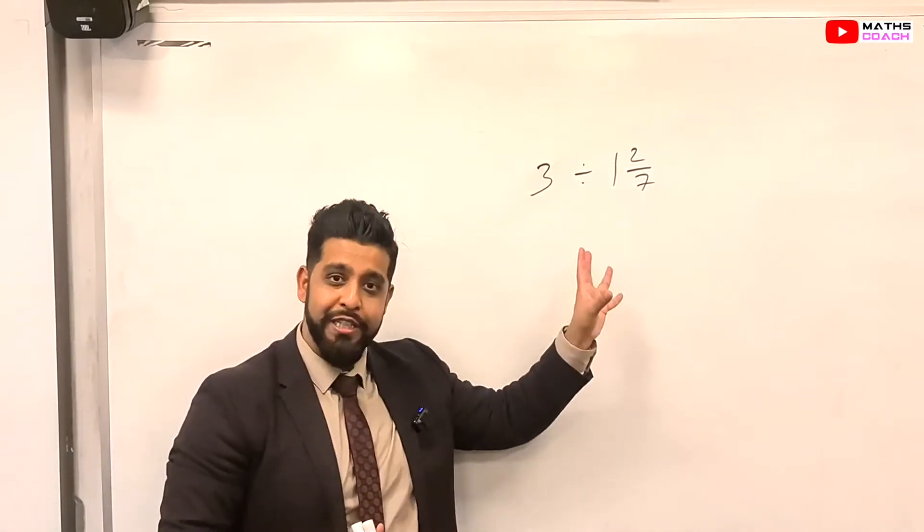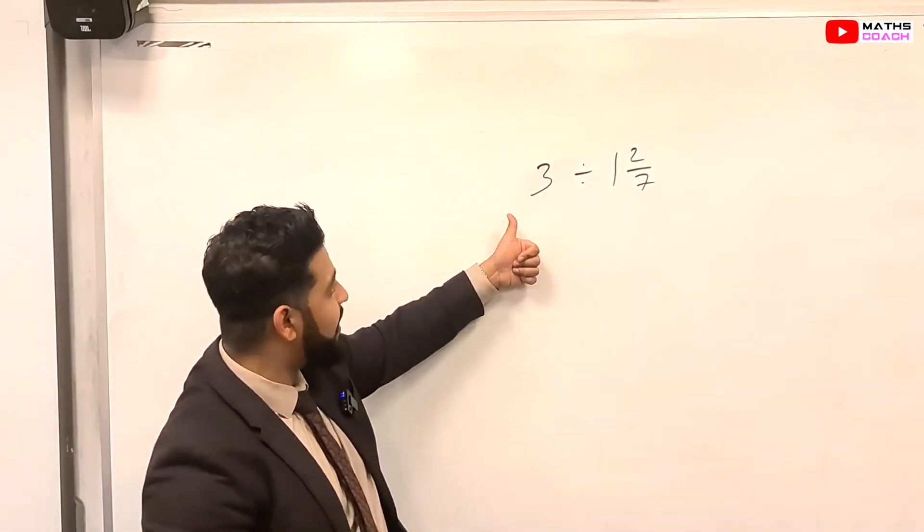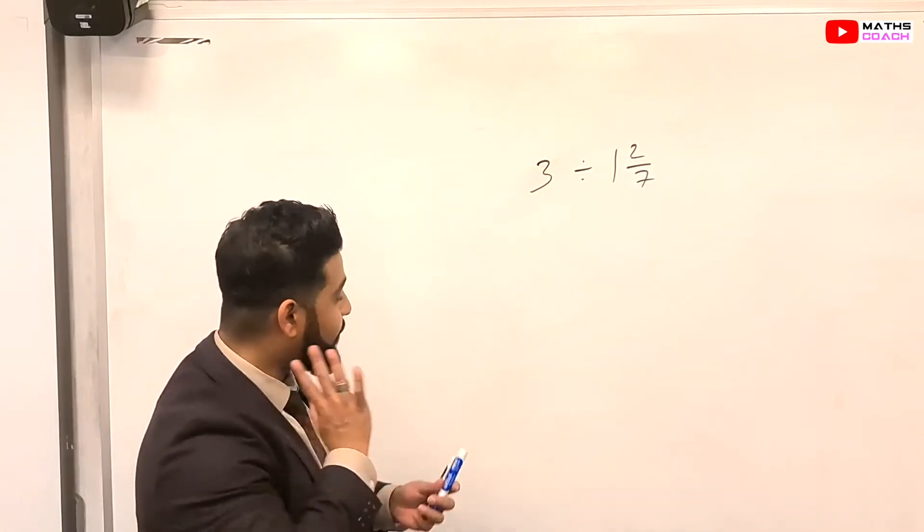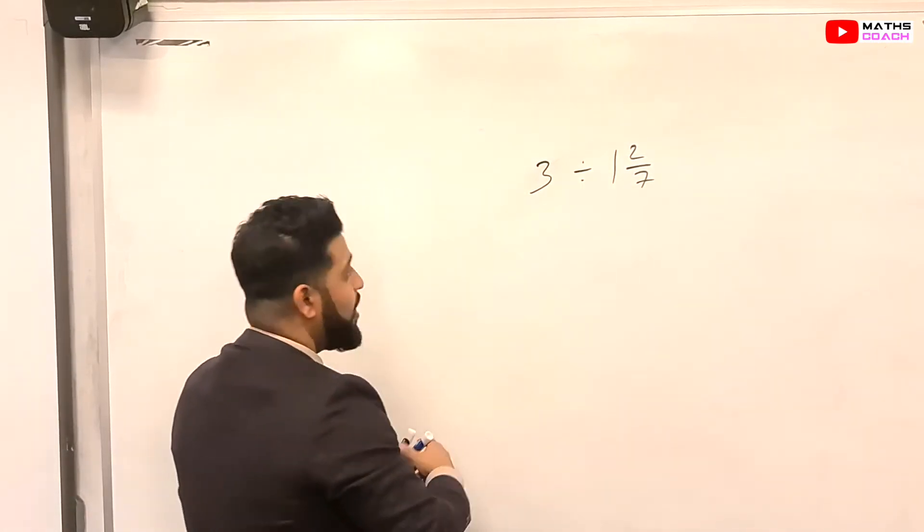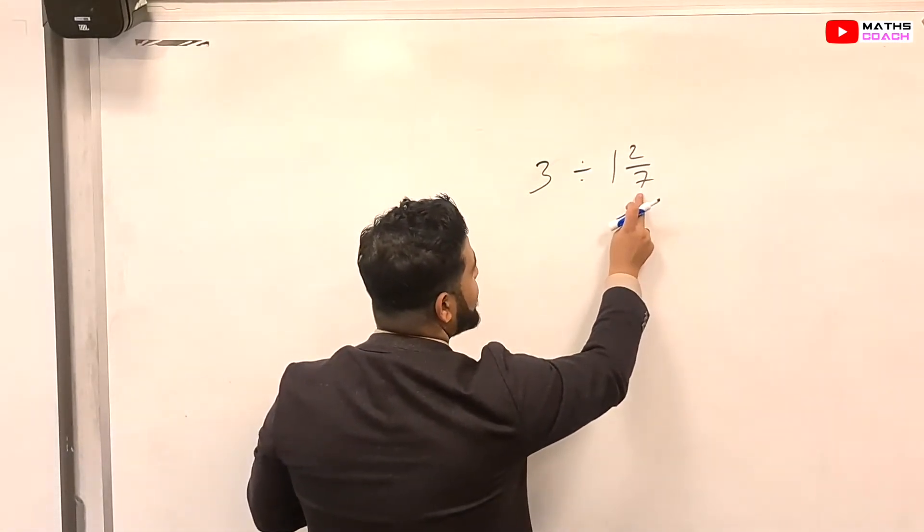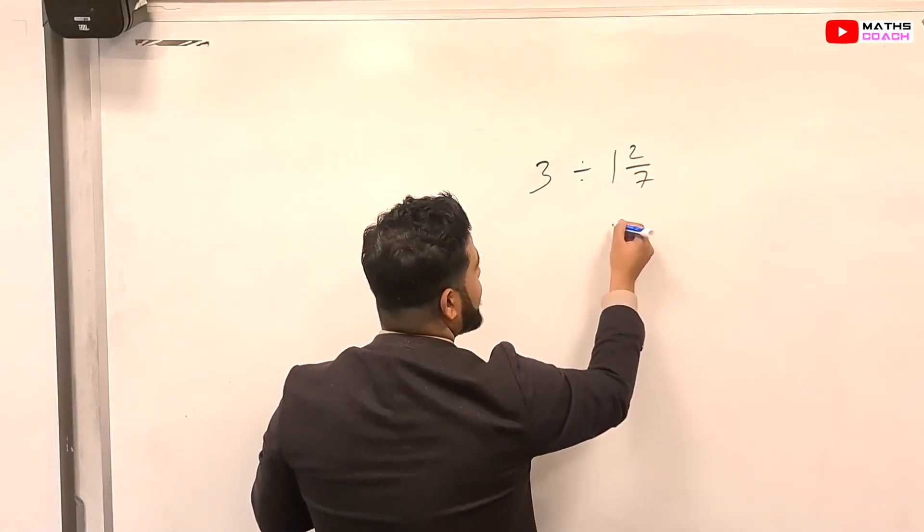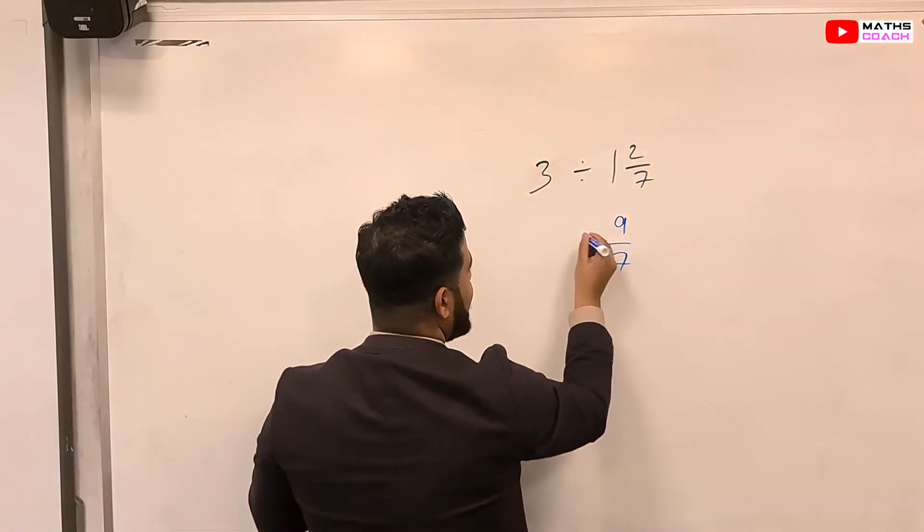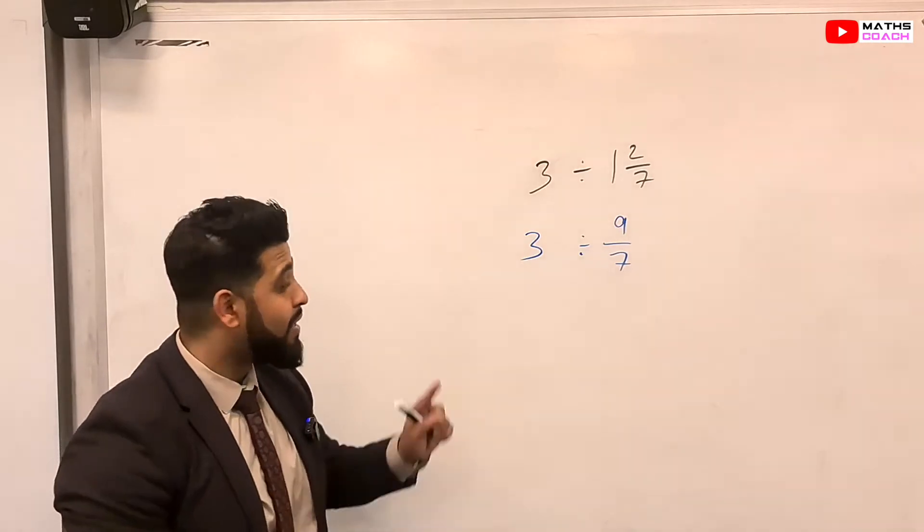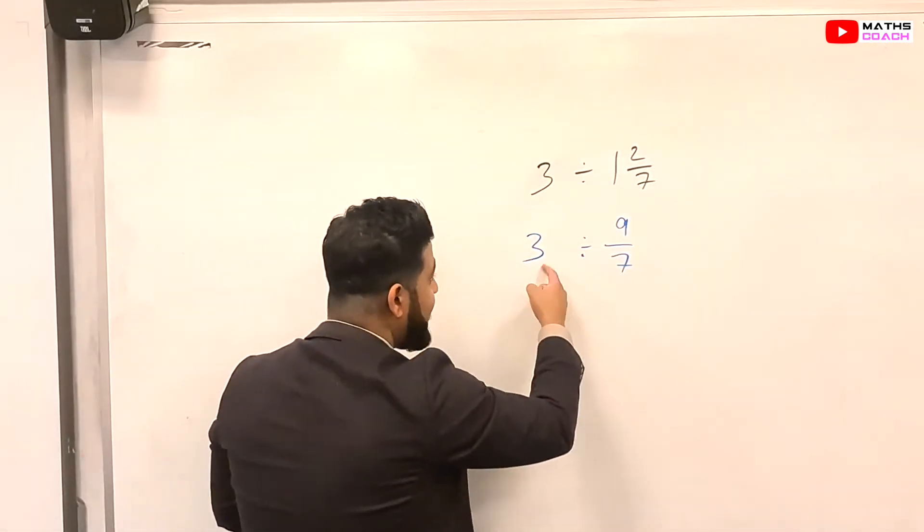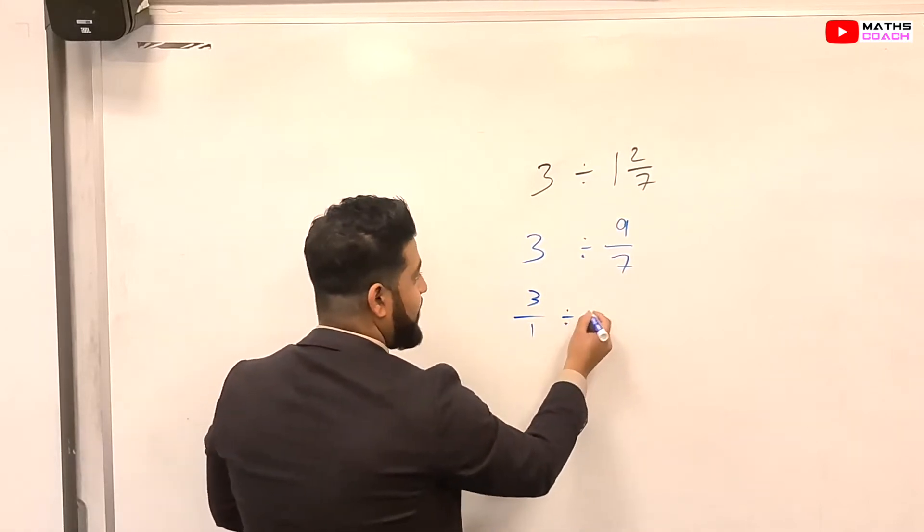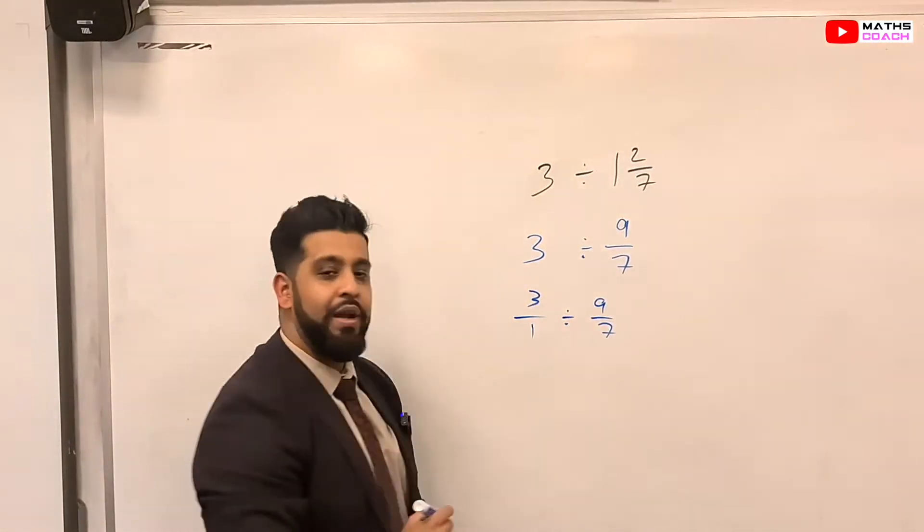Now this one is quite interesting because it has a whole number, it has a division, and it has a mixed number as well. Right, first of all, let's deal with this mixed number because we've been dealing with it throughout the video. So let's do that first. So 1 times 7 plus 2, that gives us 9/7. And then we have a division, and then we have this 3. How do we deal with 3? 3 can be written as a fraction as 3/1.